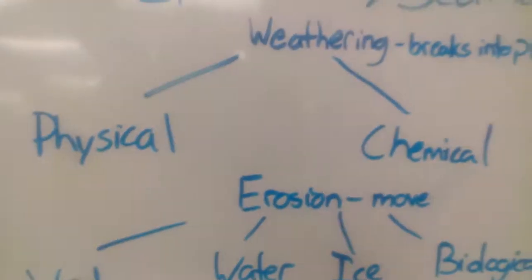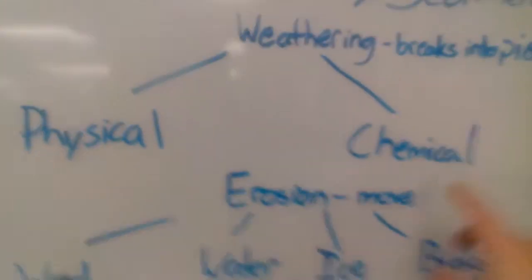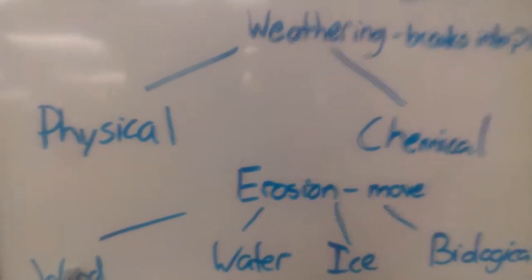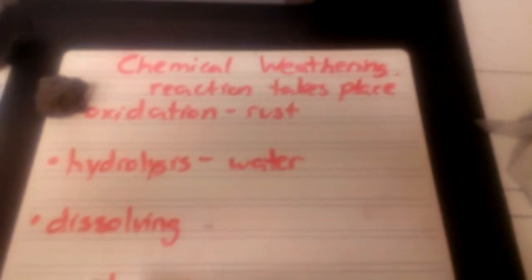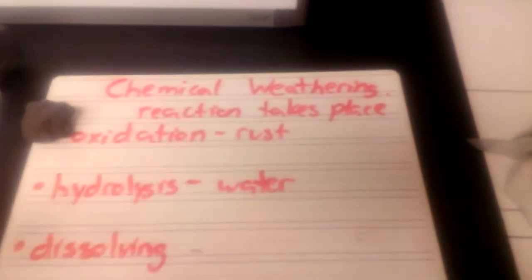So we did physical, now we need to go over to chemical weathering. So chemical weathering, how is it different than physical? Well, it's going to actually react with something. So something's going to change chemically in our actual weathering process.